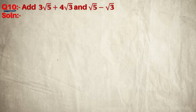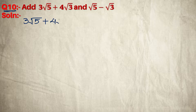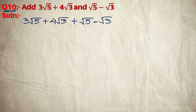Question number 10: add 3 root 5 plus 4 root 3 and root 5 minus root 3. So: 3 root 5 plus 4 root 3 plus root 5 minus root 3. Now collect the like terms.